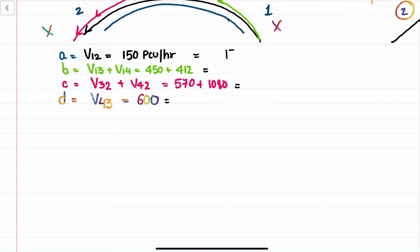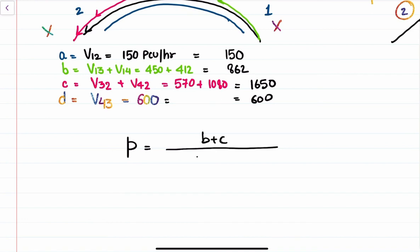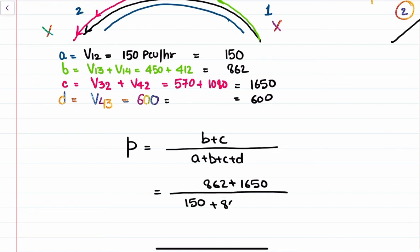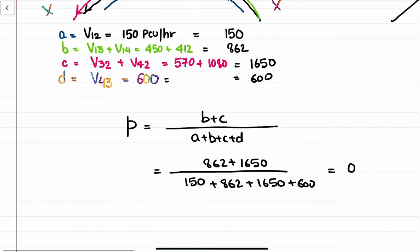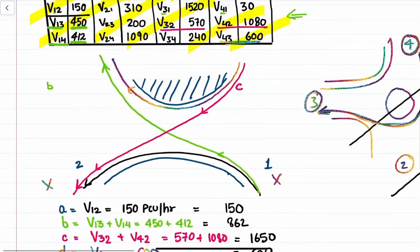So the values are: A = 150, B = 862, C = 1650, and D = 600. The weaving ratio equals (B + C) divided by (A + B + C + D), which is (862 + 1650) divided by (150 + 862 + 1650 + 600), giving a weaving ratio of 0.77. This is how we find out the weaving ratio, or proportion of weaving section.